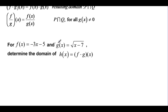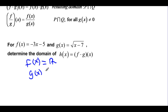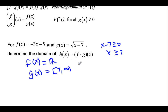Let's try it out. We have two functions: determine the domain of f times g of x. The domain of f of x is all reals. For g of x, x minus 7 has to be greater than or equal to 0, so x has to be greater than or equal to 7, meaning the domain goes from 7 to infinity. Since f of x is all reals and g of x goes from 7 to infinity, they have 7 to infinity in common.